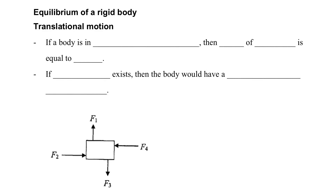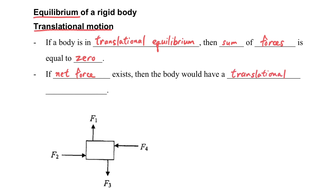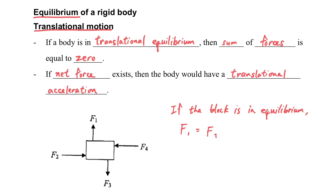Equilibrium of a rigid body. In translational equilibrium, translational motion means moving up, down, left, or right. If a body is in translational equilibrium, the sum of the forces is equal to zero — the net force is equal to zero. We learned this from Newton's second law. So if the block is in equilibrium, the total upward force equals the total downward force, so F1 equals F3, and the total force towards the left equals the total force towards the right.